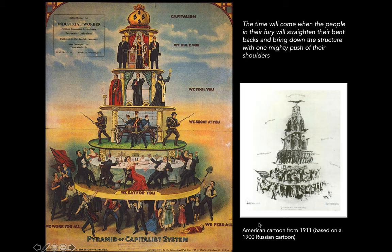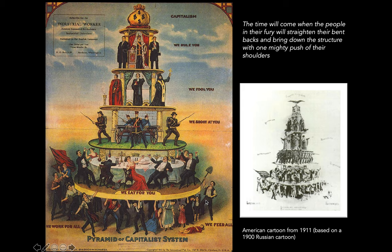This is an American cartoon based on a Russian cartoon — The Pyramid of the Capitalist System — in American socialist circles, which were rather sizable in the early 20th century. It's based off a 1900 Russian cartoon. These are the ideals we're dealing with in the Russian Revolution: the political ideology involved, and the idea, going back to Marx, that to understand capitalism, society, and history you have to understand the antagonisms between classes — and that the material foundation of society, politics, and history are the workers. They're the ones holding everything up.